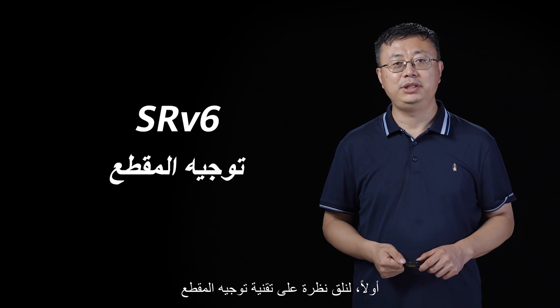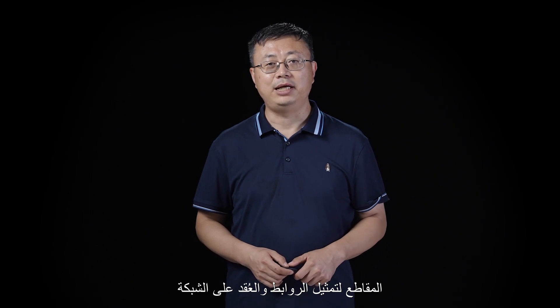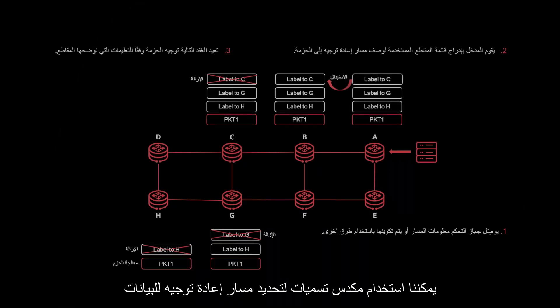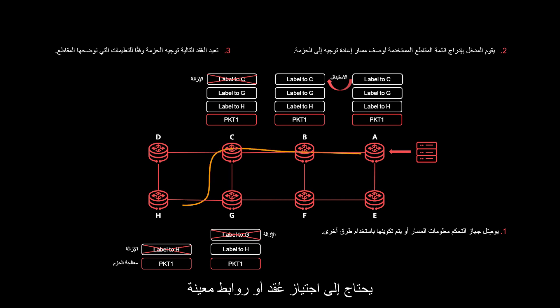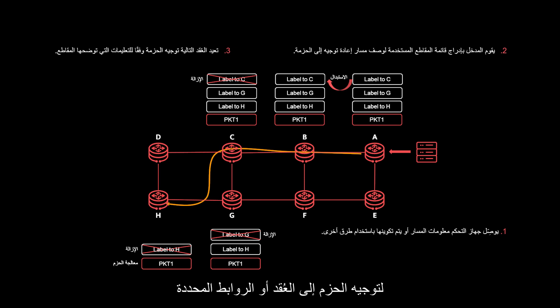Let's look at the segment routing technology, which was proposed in 2013. Leveraging the source routing mechanism, this technology uses segments to represent links and nodes on the network. In the MPLS forwarding plane, segments are represented using labels — some labels represent specific nodes, whereas others represent specific links. We can use the label stack to identify a data forwarding path that needs to traverse specific nodes or links. This label stack is called an SR path, and each SR path is generated on the ingress to direct packets to the specific nodes or links.